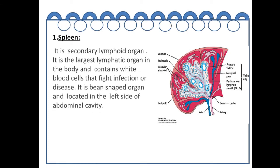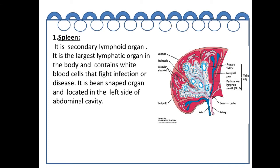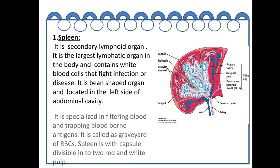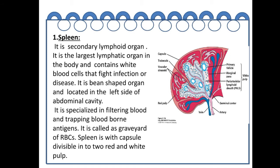The spleen is a secondary lymphoid organ and is the largest lymphatic organ. It contains white blood cells that fight infections. It is a bean-shaped organ located on the left side of the abdominal cavity. It specializes in filtering blood and trapping blood-borne antigens, and is called the graveyard of RBCs. The spleen is encapsulated and divisible into two parts: red pulp and white pulp.